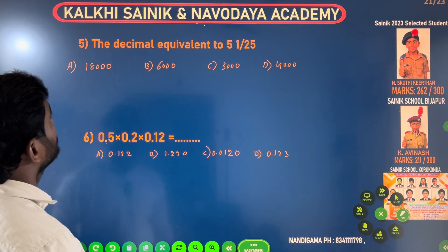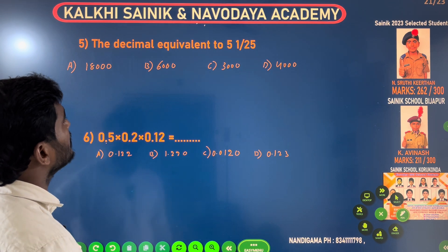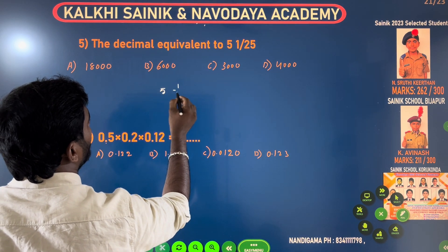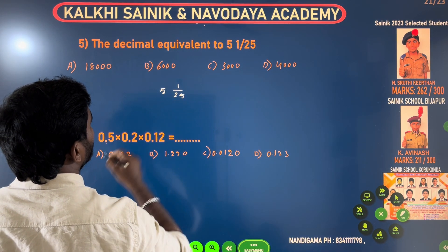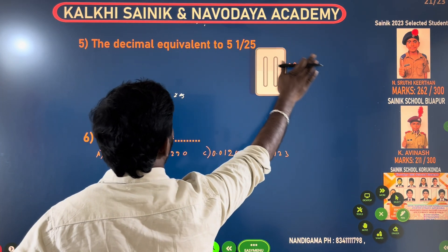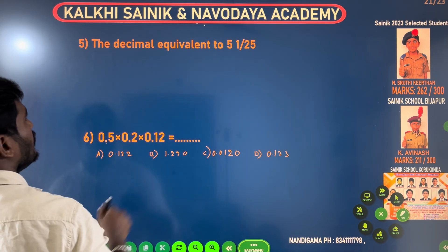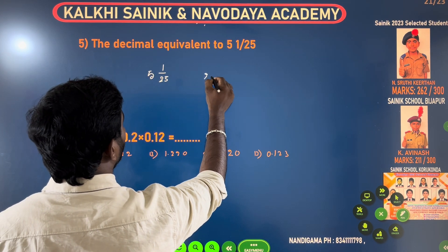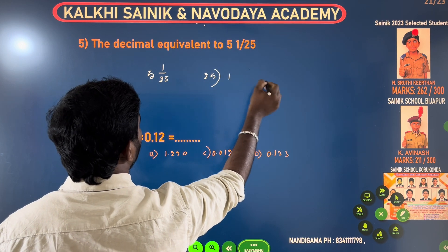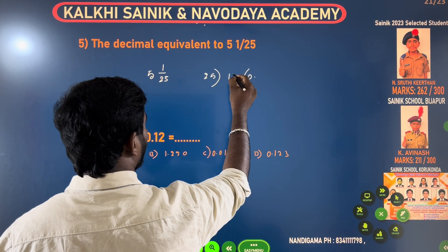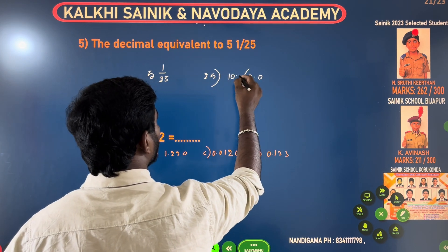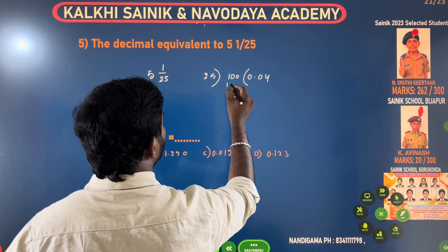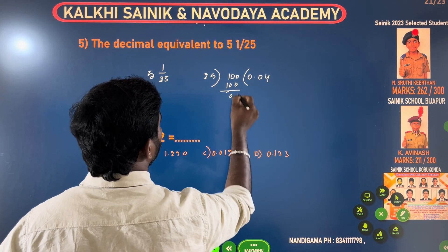The decimal equivalent of 5/12 by 25. 5, 1, 2 — 5 by 1 by 25 will be clear. I will give you 5 by 1 by 25. If I do 25, I will give you 0 points. If I give you 0 points then 100 points. If you cancel in times, then I will give you 4 times. It is right — 0.